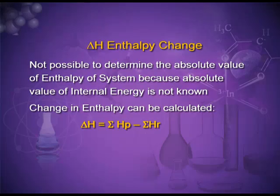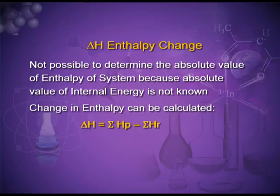For an exothermic process, the change in enthalpy and change in internal energy are negative. For an endothermic reaction, delta H or delta U is positive. To find out the change in enthalpy, we can calculate it as the sum total of enthalpies of the products minus the sum total of enthalpies of the reactants.